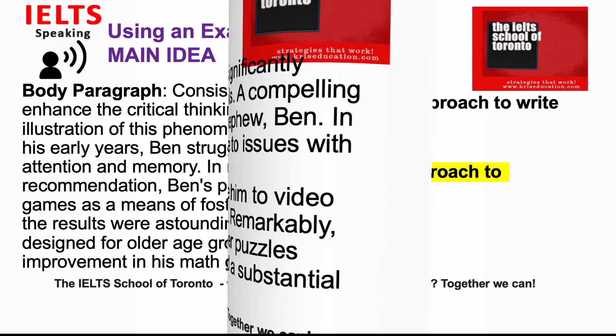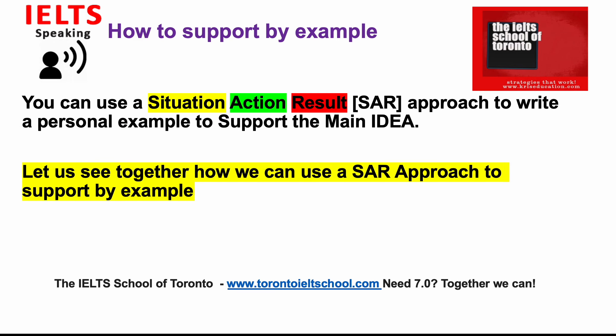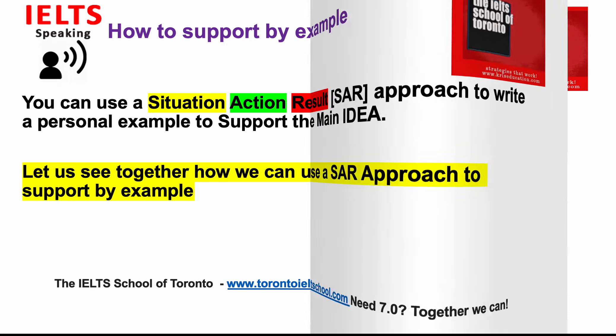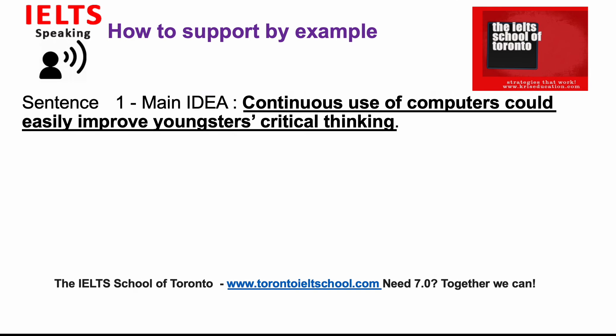You can use a Situation-Action-Result approach to write a personal example to support the main idea. Sentence one introduces the main idea — make sure this sentence does answer the essay question. Example: Continuous use of computers could easily improve youngsters' critical thinking.